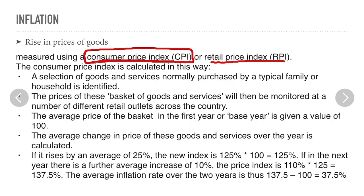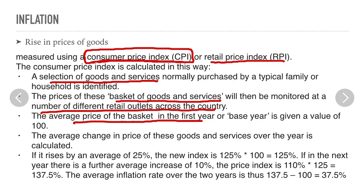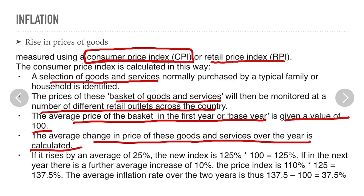The consumer price index is calculated by selecting goods and services normally purchased by a typical family or household. Then the prices of the basket of goods and services would be monitored at a number of different retail outlets across the country. Then the average price of the basket in the first year, which is also the base year, is given a value of 100. Then the average change in price of these goods and services over the year will be calculated.